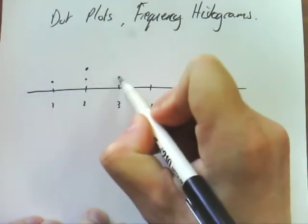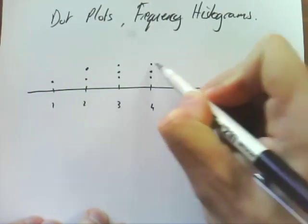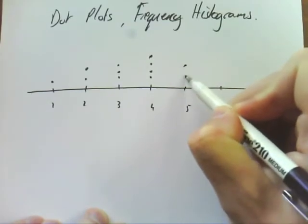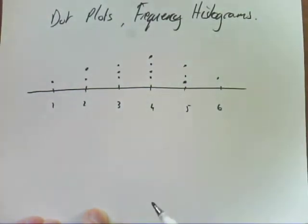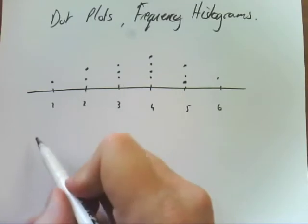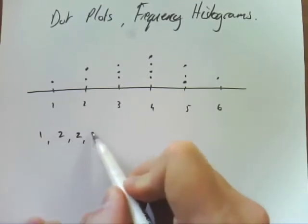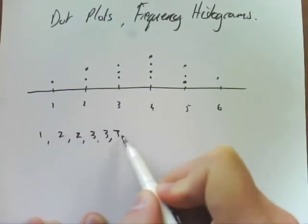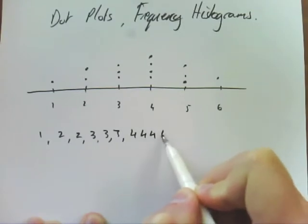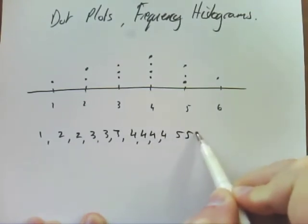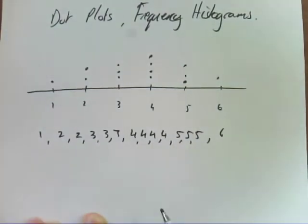And all it is is just each dot represents a particular piece of data, and that's all it is. So if I were to write this data set out, it would be 1, 2, 2, 3, 3, 3, 4, 4, 4, 4, 5, 5, 5, and 6. So that's my data set, and that's the dot plot that goes with that data set.